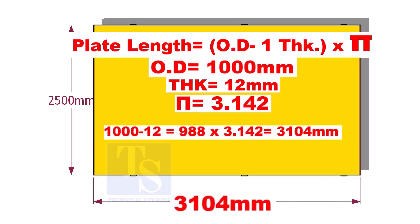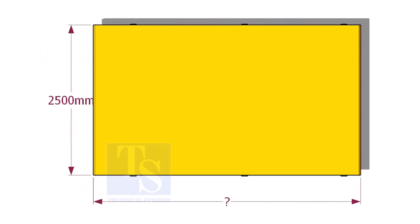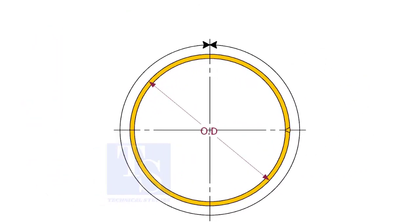If you mark this length on a 12 mm thick plate, after rolling the plate, the outer diameter of the plate will be 1000 mm, and the circumference will be 3142 mm.